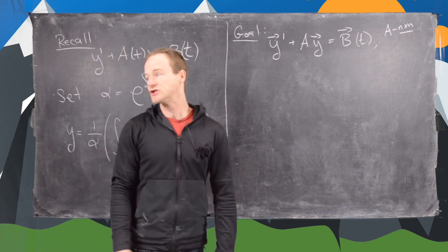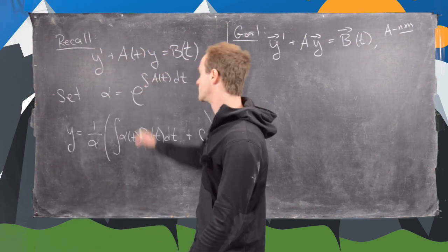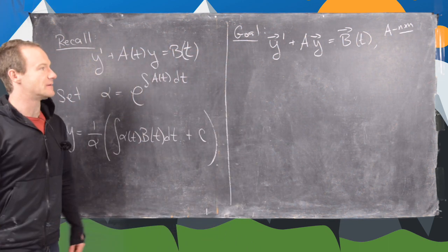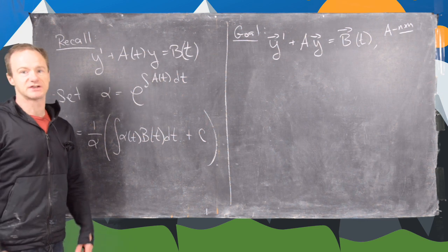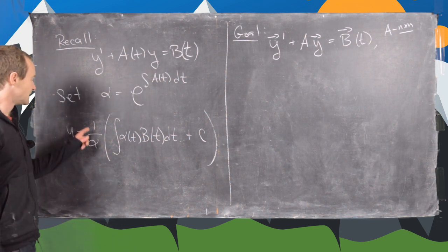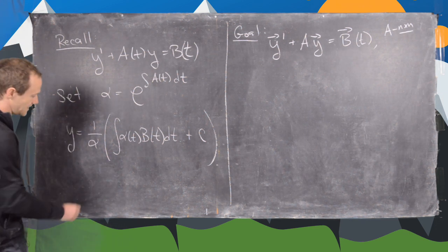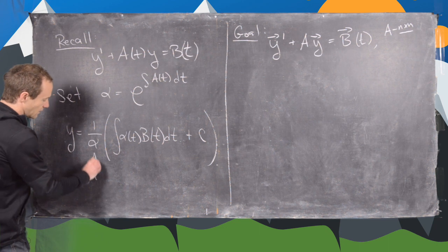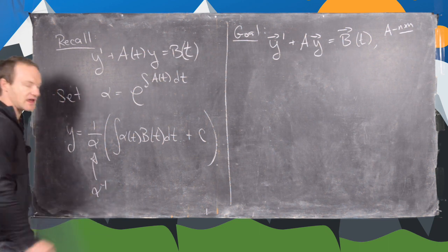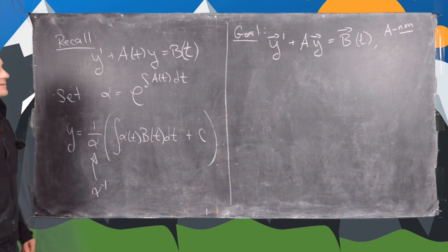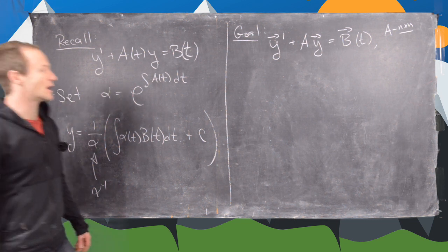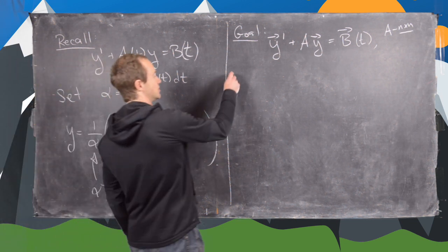Alpha can be replaced with the matrix exponential — that's how we want to think about that. And 1 over alpha can be thought of as alpha inverse, so it would be the inverse of the matrix exponential. Let's see what our guess should be.